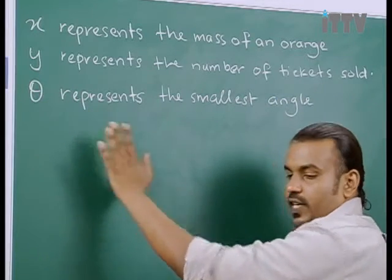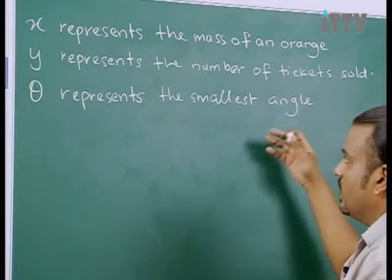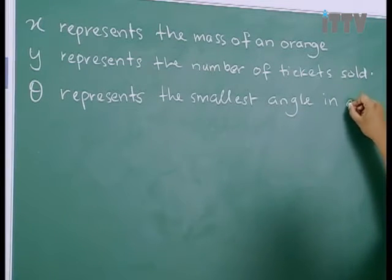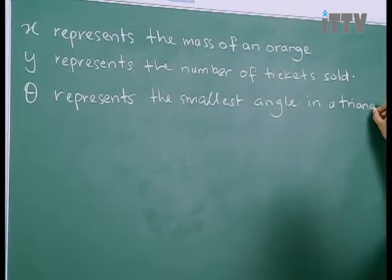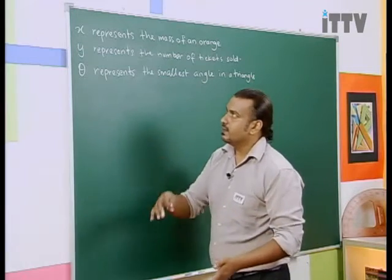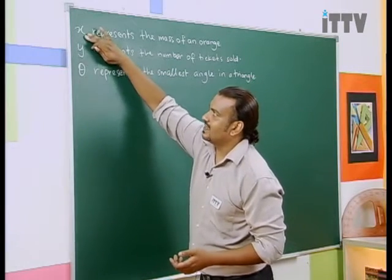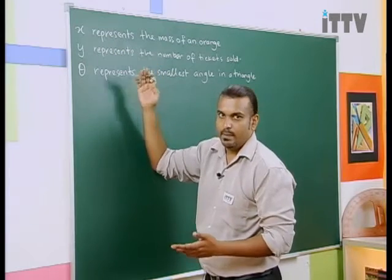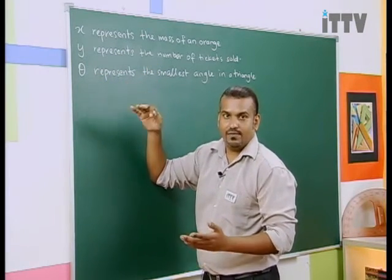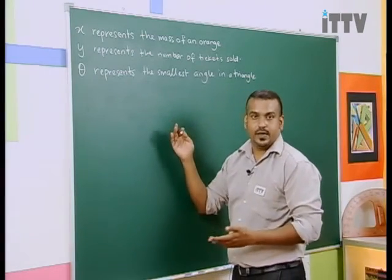Or sometimes we can use a symbol. There are lots of symbols like beta, alpha but something that's quite simple would be this. This is a symbol called theta. Now say for example, theta represents the smallest angle. Now you see boys, angles? Theta is usually used for angles. So it could be the smallest angle anywhere, maybe say for example, in a triangle.